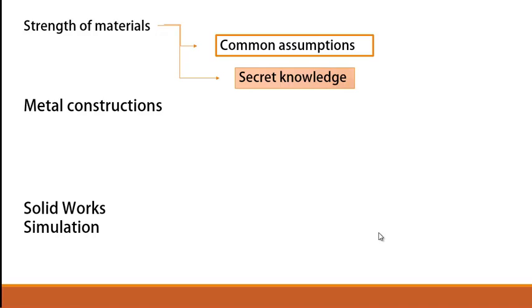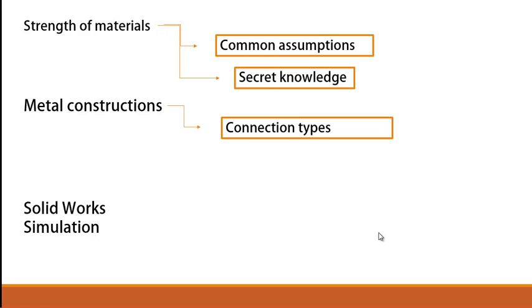The second part is about metal constructions. Here, we are going to look at connection types, what type of typical steel connections we know, by means of what they are usually attached to each other, how they look like, and so on.